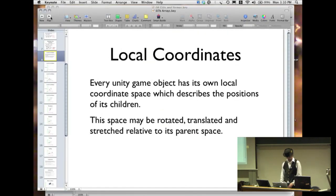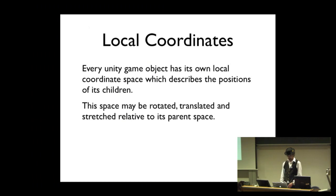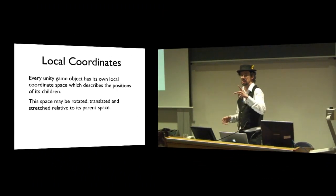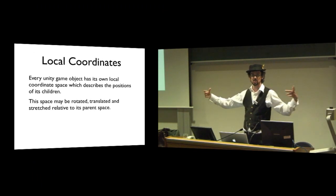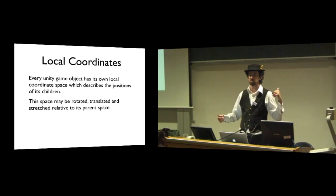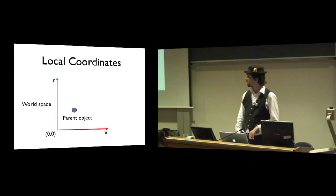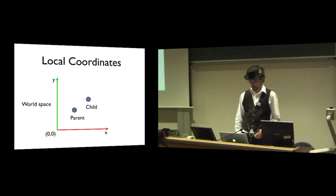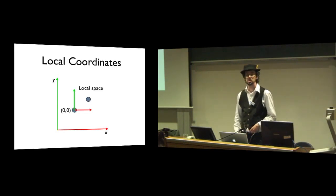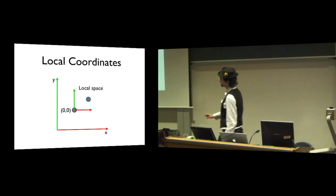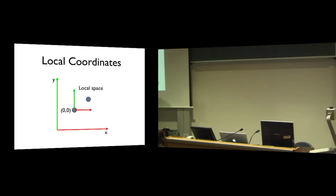That local coordinate space can be rotated, translated, and scaled with regard to the world space. If we take a world space and put a parent object in it, and then a child object attached to that parent, the child exists within the local space of the parent. Zero, zero in that local space is the position of the parent object, and the child has whatever position it has within that space.